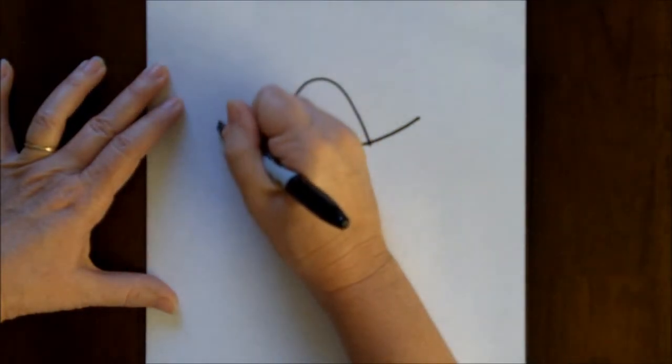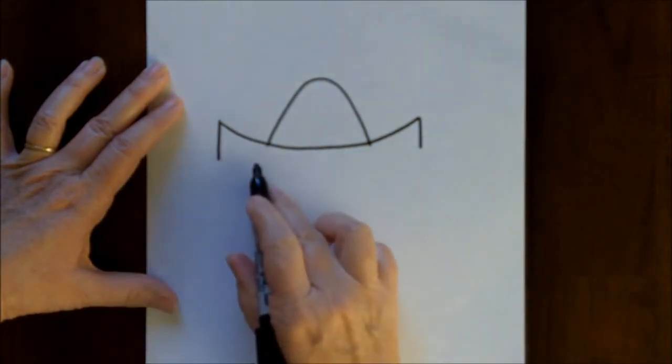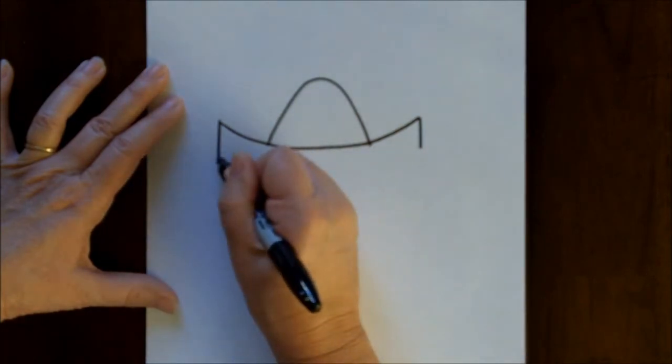We're going to make some straight lines coming down, and then we are going to make another curved line that follows the first curved line.